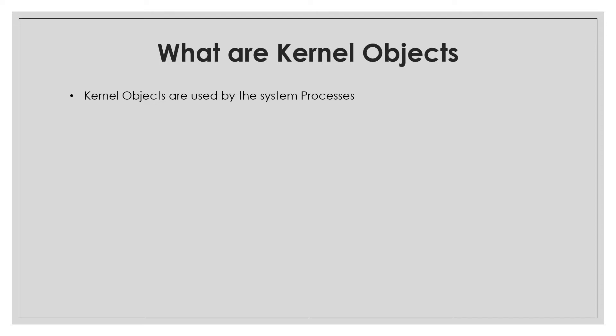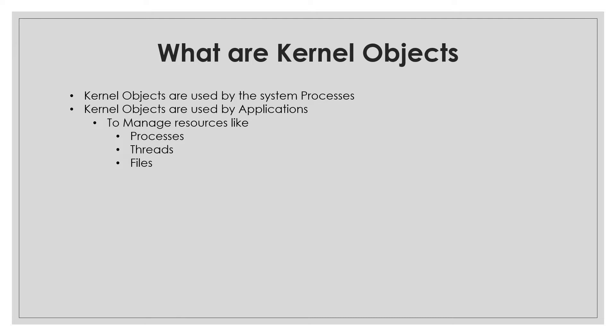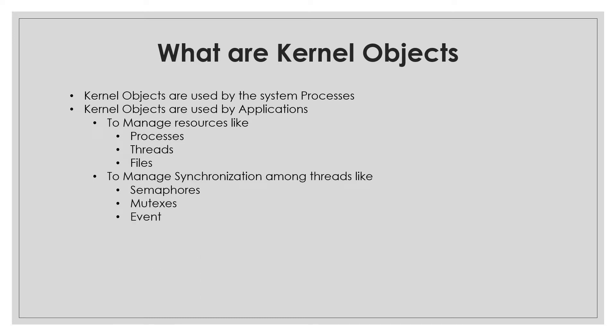Kernel objects are basically used by the system processes to manage various resources like memory, different processes, threads, files, etc. Kernel objects are also used by applications. These applications might be managing some resources like processes, threads, and files. These are some of the examples.